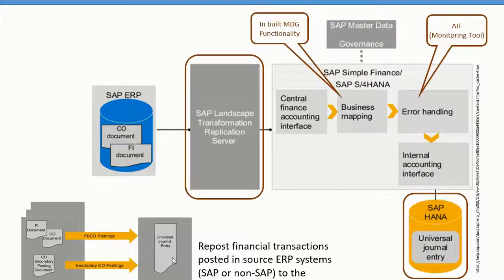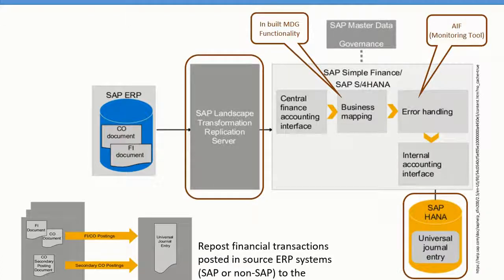You can replicate FI and CO documents — all FI and CO documents get combined and posted into the Universal Journal as a single line item. You can also replicate CO postings or secondary postings of CO into the Universal Journal, as well as short-lived objects like internal orders and cost objects, which you can replicate on a real-time basis from the source system into the target system.